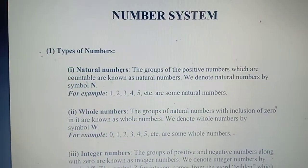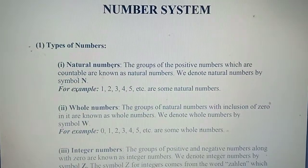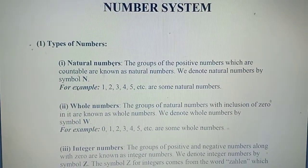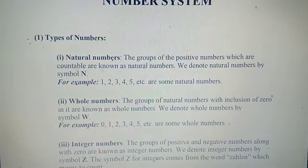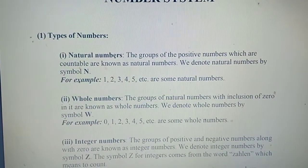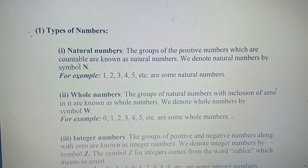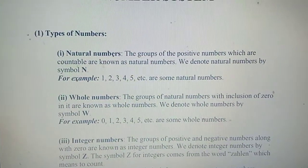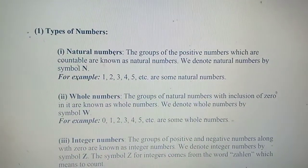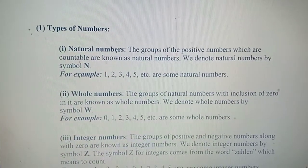First are natural numbers. The groups of positive numbers which are countable are known as natural numbers. We denote natural numbers by the symbol capital N. Here are some examples of natural numbers: 1, 2, 3, 4, 5, and so on.